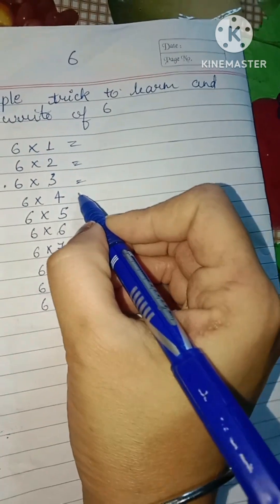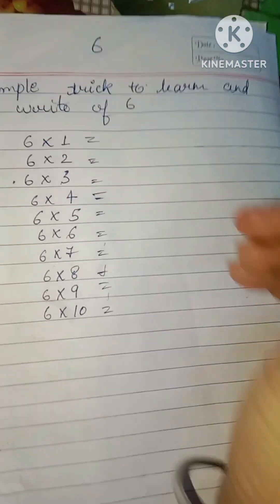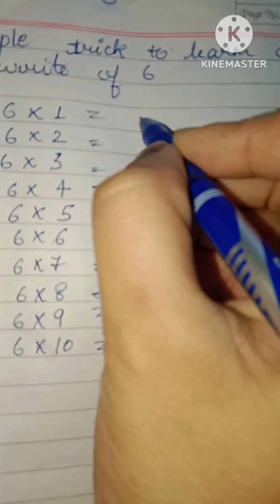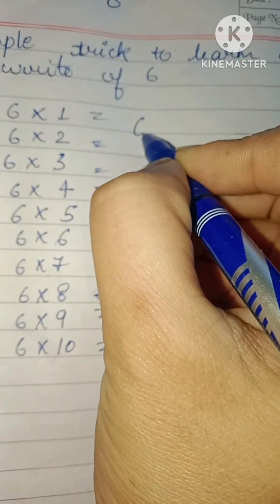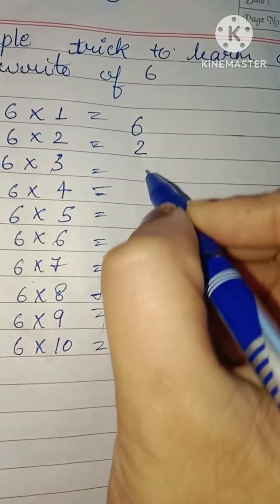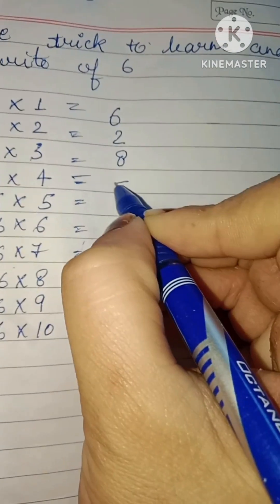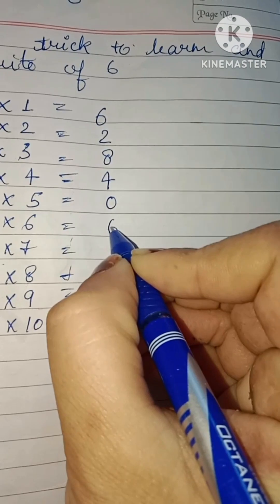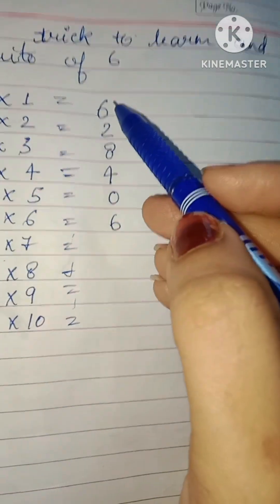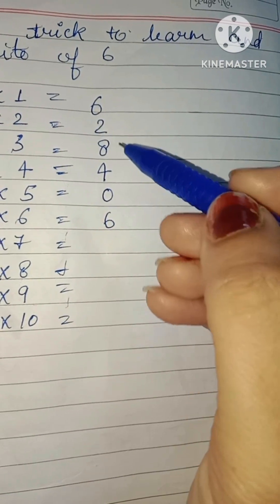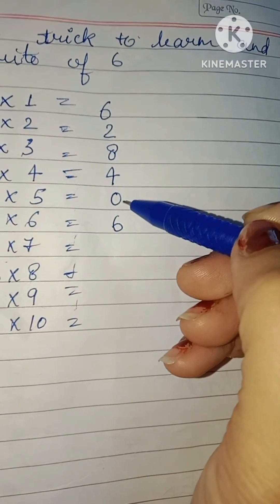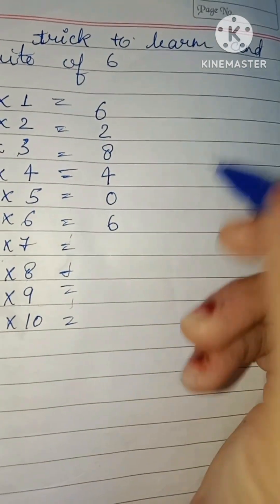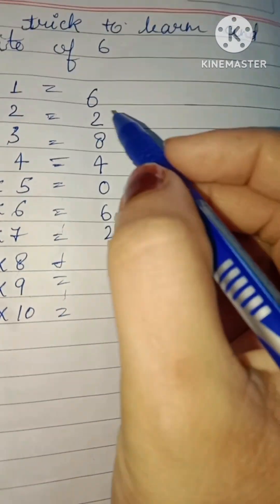As every student knows, six one is just six. Six into one means six. Six one is just six — everyone knows that. Then what will you write? Two, eight, four, zero. These five numbers you have to learn: six, two, eight, four, zero. Six plus two is equal to eight, then four, then zero. Six, two, eight, four, zero — you have to repeat these numbers.